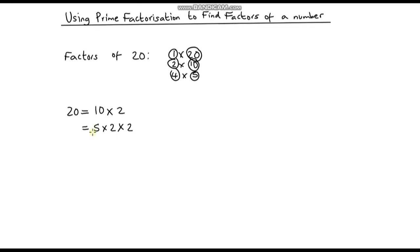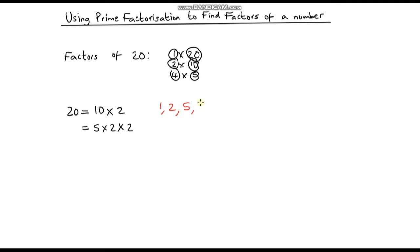Well, if we know that 20 is made up of 5 times 2 times 2, then all we need to do is look at the different combinations we can get from these prime numbers, and that will give us all of our factors. So 1 is a factor because 1 is a factor of every whole number. We've also got 2, and 5. We've also got 2 times 2, which is 4, so 4 is another factor.